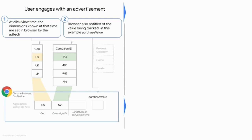In addition to that, the ad tech would also specify what value they are planning on tracking. In this example, they have decided to track purchase value, which they have indicated here as well.